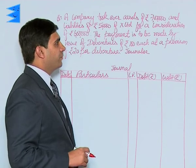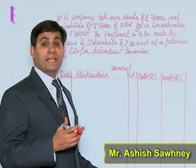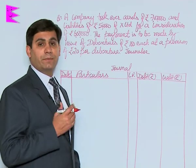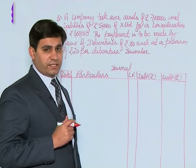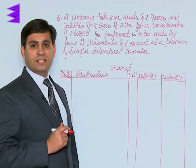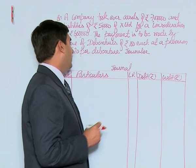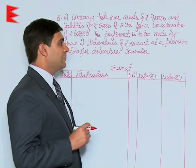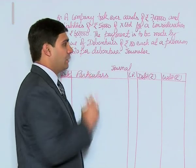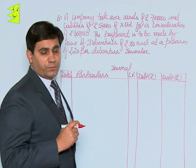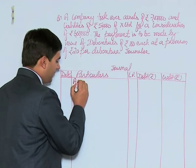A company took over assets of rupees 7 lakh and liabilities of rupees 50,000 of X Limited. X Limited is a vendor here. The purchase consideration has been decided to be 6 lakh. The payment is to be made by issue of debentures of rupees 100 each at a premium of 20 per debenture. We are supposed to journalize this.